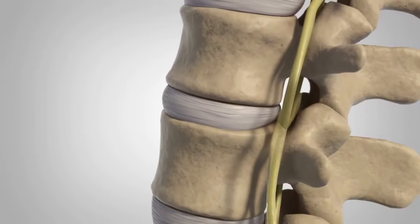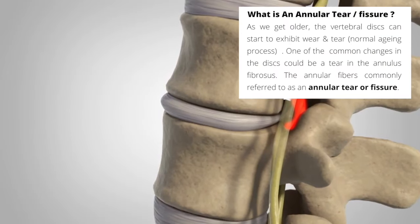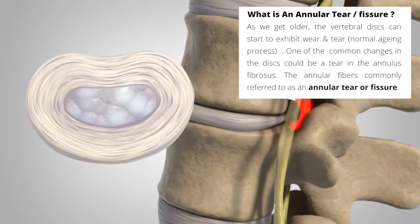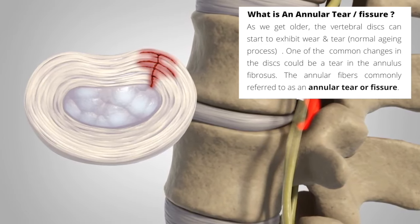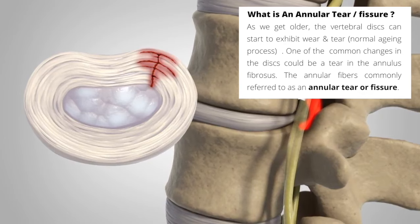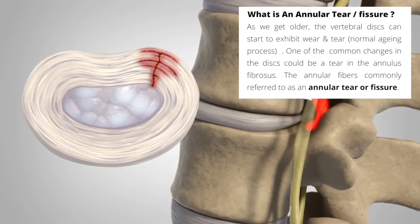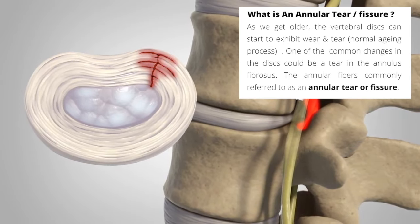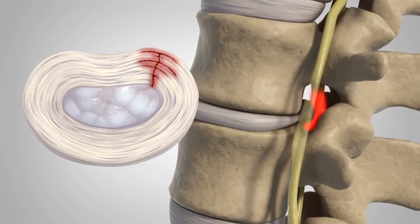But what does an annular tear or fissure mean? As we get older, the vertebral discs can start to exhibit wear and tear, which is a normal aging process. One of the most common changes in the disc could be a tear in the annulus fibrosis, commonly referred to as an annular tear or annular fissure, which means in a normal aging process, the majority of cases, we do have an annular tear at some stage in our life.